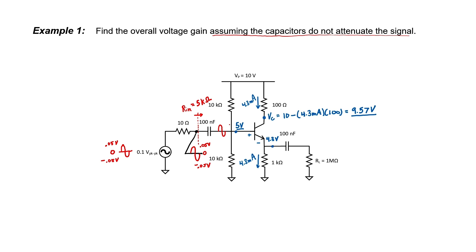At the base, the signal now has a DC portion added — it's still an AC signal but centered at 5 volts, rising to 5.05 volts and falling to 4.95 volts. At the emitter, we subtract 0.7 volts: the center point becomes 4.3 volts, swinging up to 4.35 volts and down to 4.25 volts. Neglecting the output impedance of the transistor, the output capacitor blocks the DC offset, so the load sees only the AC portion swinging up by 0.05 volts and down by 0.05 volts.